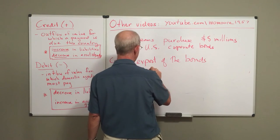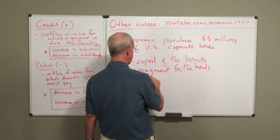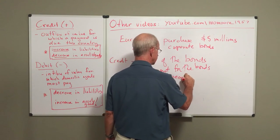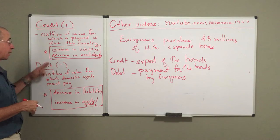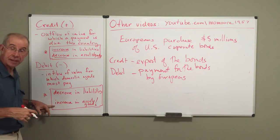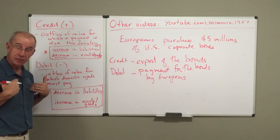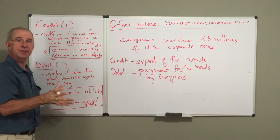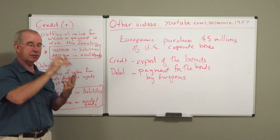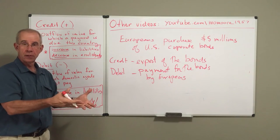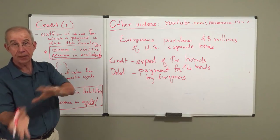The payment for the bonds by Europeans will be a debit — this is an increase in the assets in the United States because there's a $5 million check coming into the United States. So in principle, every transaction, whether it be the purchase and sale of a good, the purchase and sale of an asset, or the purchase and sale of a service between the United States and foreign entities, is going to have both a credit and a debit of equal amounts.